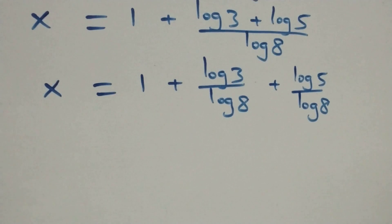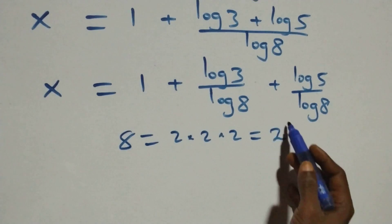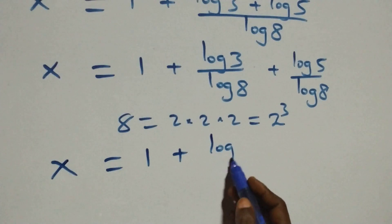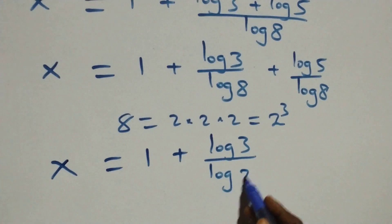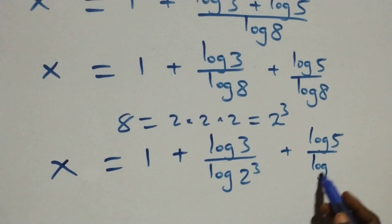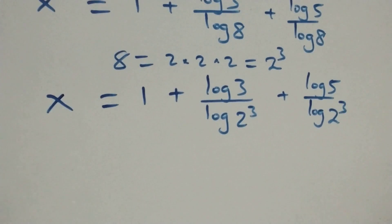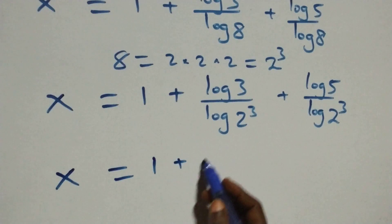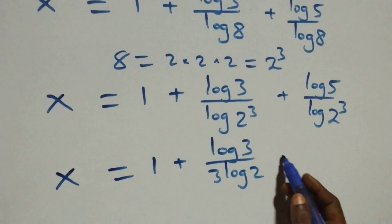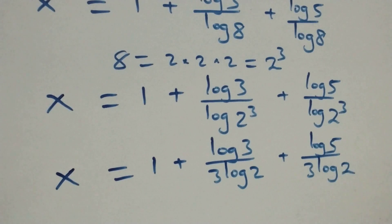Also, we can write 8 as 2 times 2 times 2, which is the same as 2 cubed. So what we have becomes x equals 1 plus log 3 over log(2 cubed), plus log 5 over log(2 cubed). Applying the power rule of logarithms, the 3 comes down, giving x equals 1 plus log 3 over 3 log 2, plus log 5 over 3 log 2.